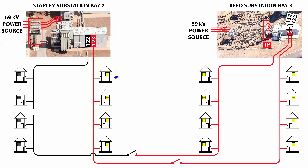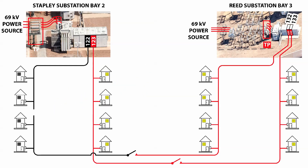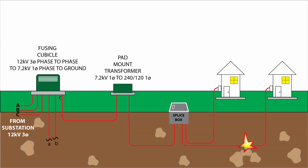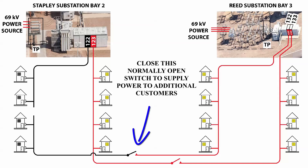After I know where the fault is, I isolate it. Isolating a fault means disconnecting the area of the fault from the rest of the power system — opening up disconnect switches or opening up circuits at 7.2 kV to 240 volt transformers creates air gaps which isolate the fault. Now coordinating with DOC, I close in the normal open, restoring power to the customers between the normal open and the fault.